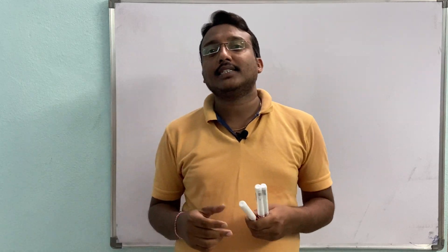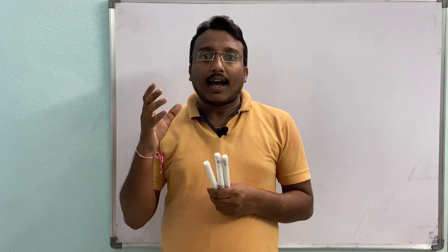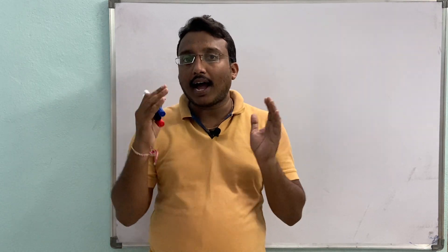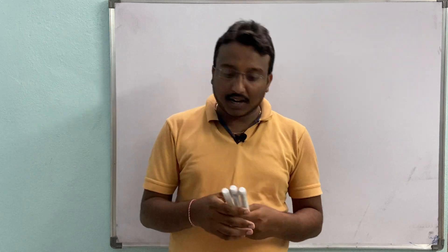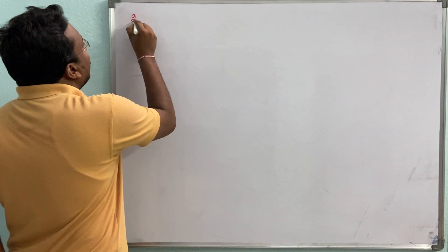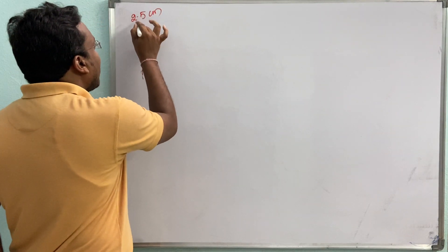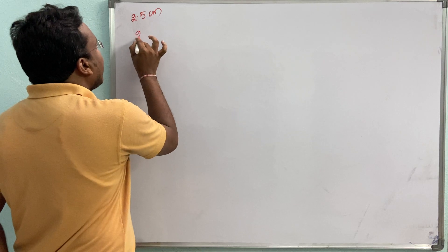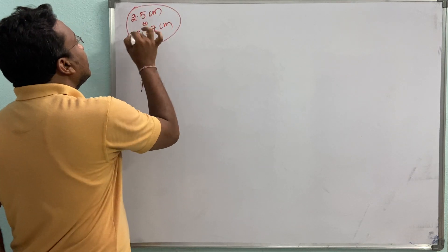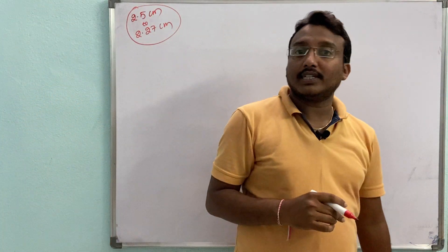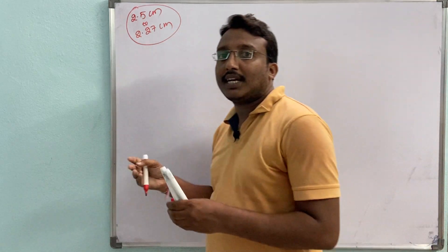In our last class we discussed the human eye and its functions. We discussed that the eye lens has the ability to change its focal length. The eye lens has a maximum focal length of 2.5 centimeters and it can change its focal length between 2.5 centimeters and 2.27 centimeters.